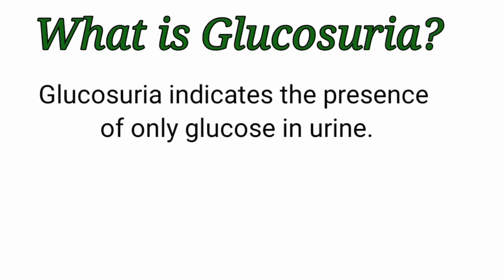Small amounts of glucose present in the urine are considered normal, but the term Glucosuria usually refers to pathological conditions where the amount of urine glucose is more than 25 milligrams per deciliter in a random fresh urine sample.